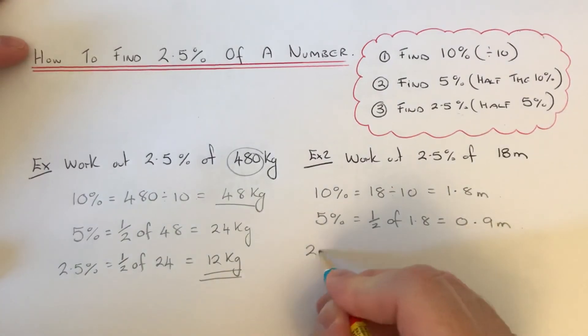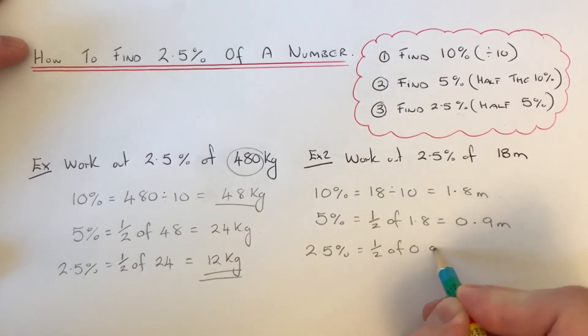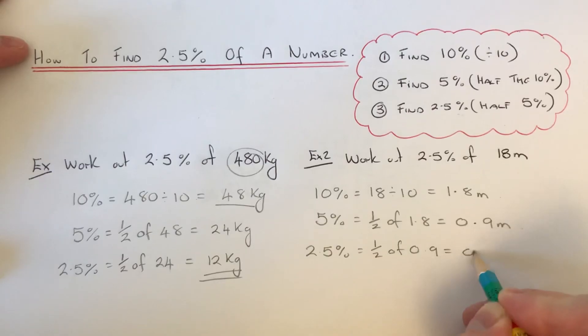And then finally to get our 2.5%, we just need to half our 5% amount. So we do a half of 0.9, which is 0.5 meters.